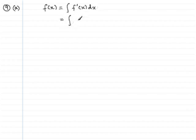Okay, so the answer to question 9 part a. We've got to find f of x, and f of x is the integral of f dash x with respect to x. That means we've got to integrate 6x squared minus 10x minus 12, all with respect to x.